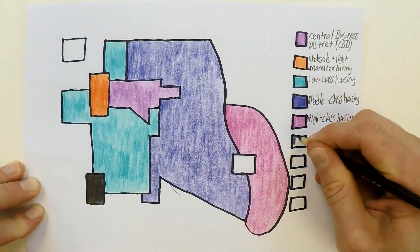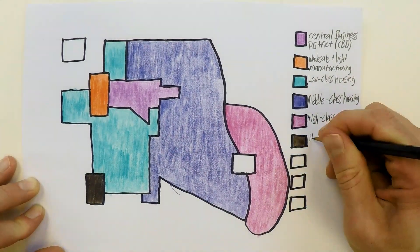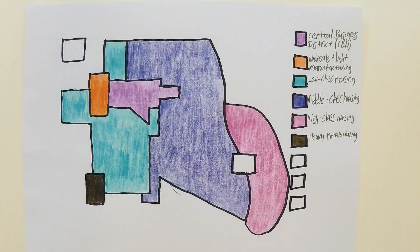Next, we have heavy manufacturing. In this region, you see more heavy industries like steel manufacturing, oil refineries, and creation of chemicals. This is different from the light manufacturing we discussed earlier — these industries require more land and transportation effort. Therefore, they are located on the outside of the model, but near the low class residents that are going to be working there.